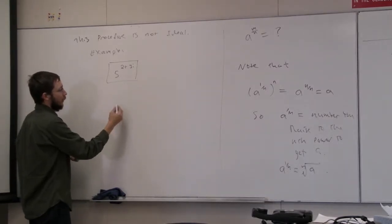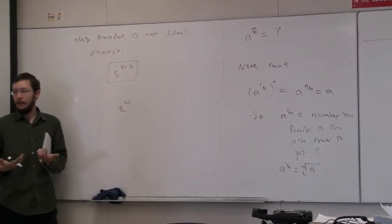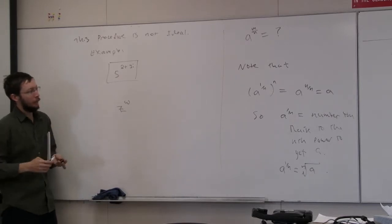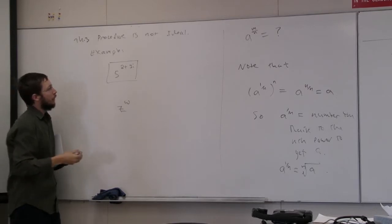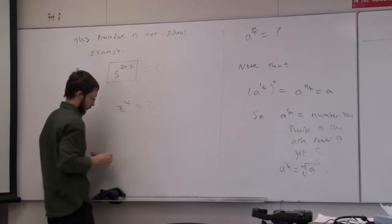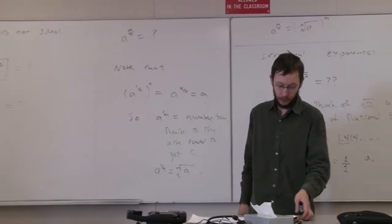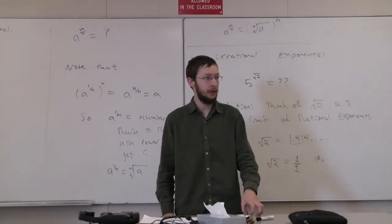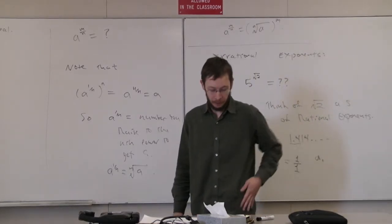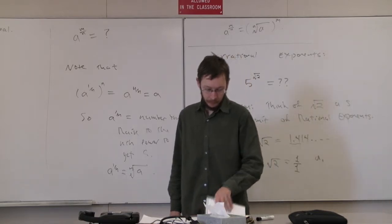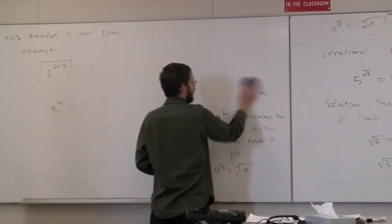It becomes even more confusing if you think about a complex base z raised to a complex exponent w. Since this limit approach only works for real numbers, we've still got some work to do. Fortunately, the method we're going to develop works for all exponents — you have to define exponents for natural numbers, but once you do that, this method works for all the others, including complex exponents.